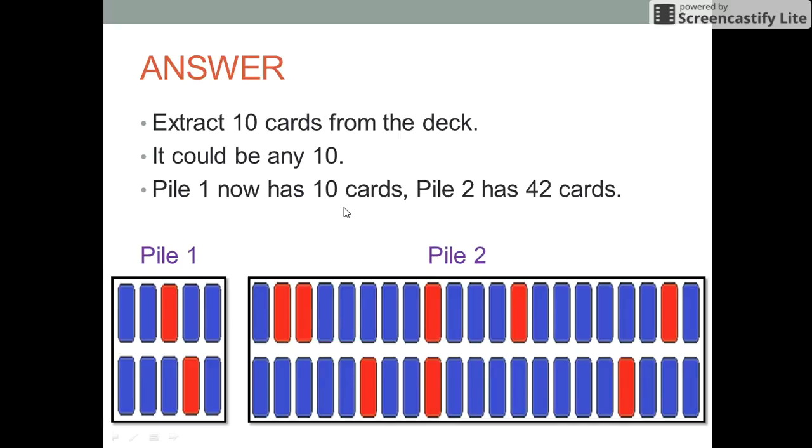Let us see a solution to the puzzle. Suppose Mr. B extracts 10 cards from the deck. Now these 10 cards could be any of the cards out of those 52 cards.